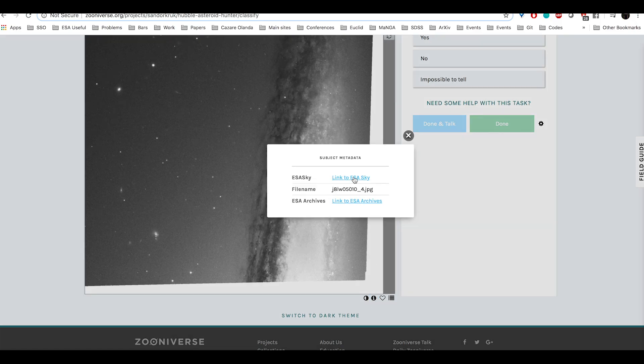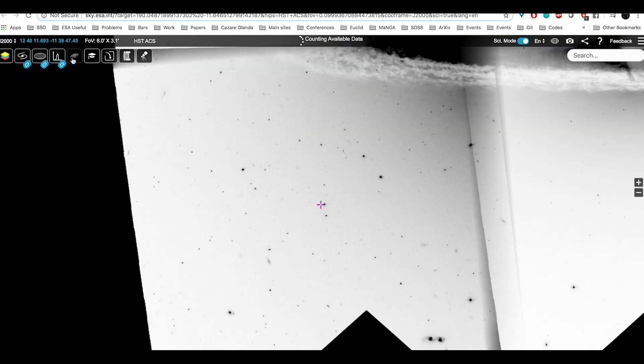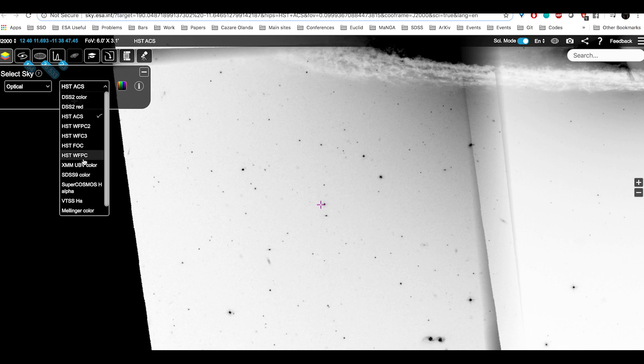You can also search for interesting deep sky objects such as the Sombrero Galaxy and explore the sky in different wavelengths on the ESA Sky Platform.